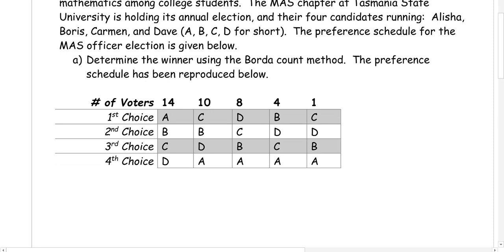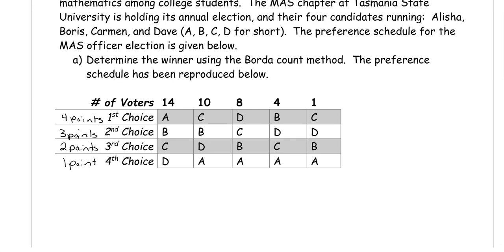We have our Preference Schedule with first, second, third, and fourth choices. We want to assign points to each position. The fourth choice gets one point, the third choice gets two points, the second choice gets three points, and the first choice gets four points. You always start at the bottom with one point, going up. If you had five choices, first place would be worth five points. If you had ten choices, first place would be worth ten, and last place would be worth one.